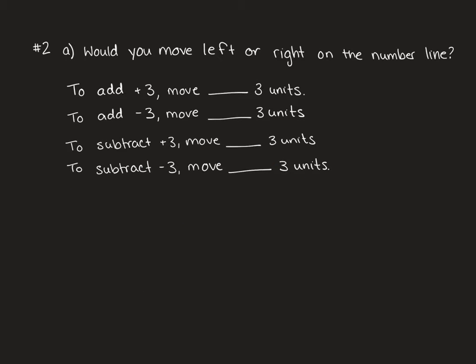Question 2 is going to ask you to fill in whether you would move left or right on the number line. If you were going to add positive 3 you would move right 3 units. If you were going to add a negative we would move left 3 units. If you're going to subtract a positive we're going to move left 3 units. And if you subtract a negative we're going to move right 3 units.